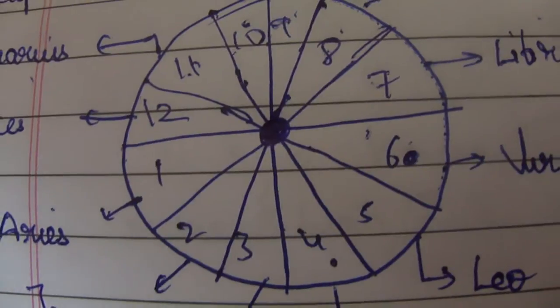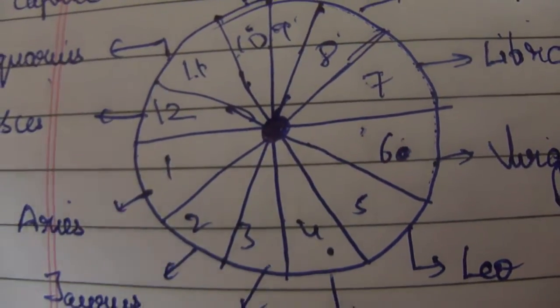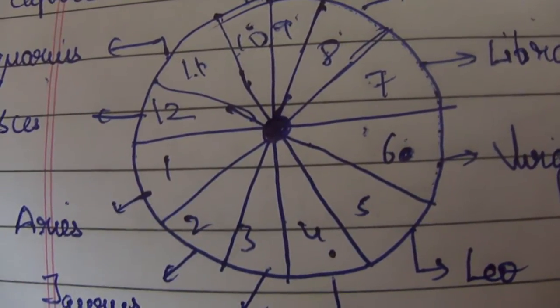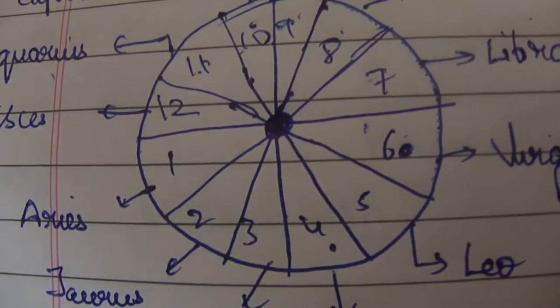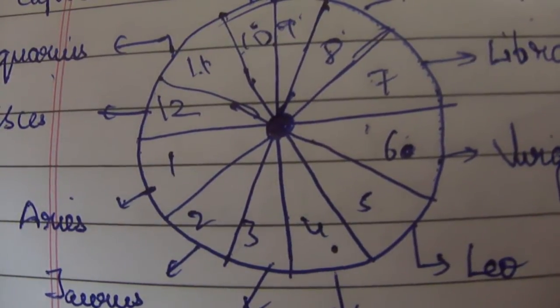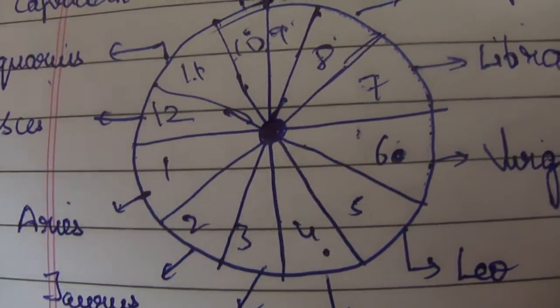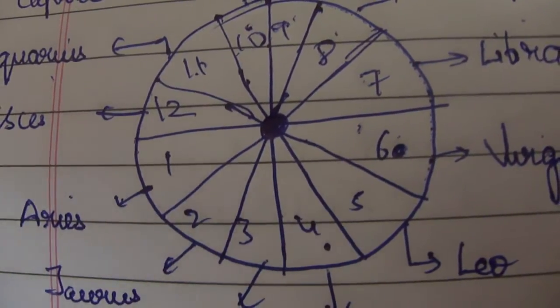Now, transits of Saturn is an important concept. Here comes the concept of Sadesati, or seven and a half years period. It refers to the transit of Saturn. Transit of Saturn means moving Saturn, so that is again referred to as Gochar. Gochar means moving Saturn. When Saturn transits over the moon for two and a half years...